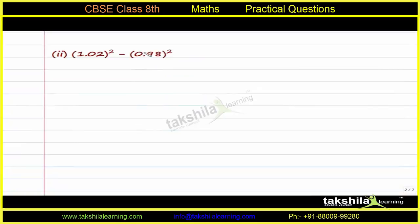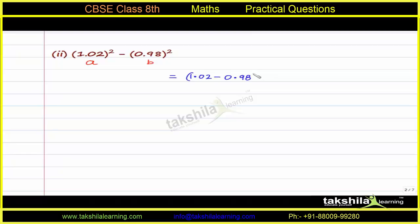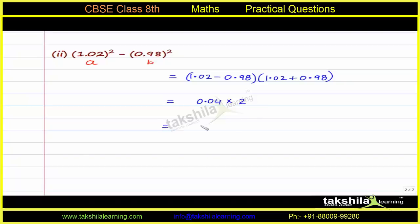In the second part, we use the formula a squared minus b squared, taking 1.02 as a and 0.98 as b. This becomes 1.02 minus 0.98 into 1.02 plus 0.98, which simplifies to 0.04 into 2, giving 0.08 as the answer.